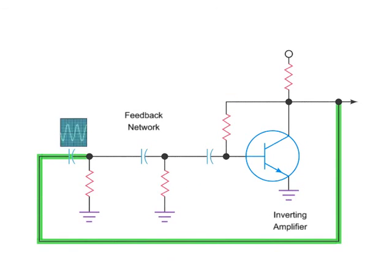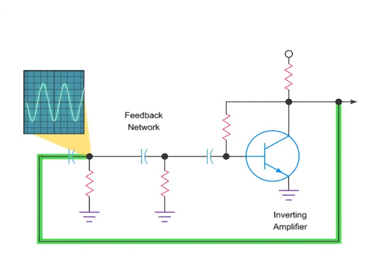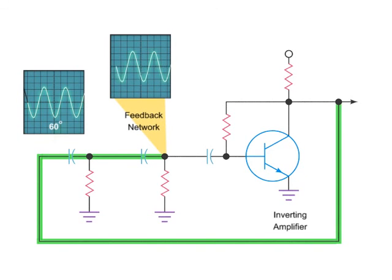Each of these capacitor and resistor units will shift the phase of the signal by 60 degrees. However, passing through each unit will also incrementally decrease the size of the signal.